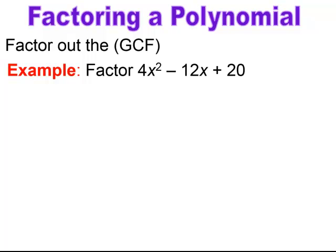In this next example, the GCF will simply be a numerical part because not every term has a variable, so there will be no variable in the GCF. I see that 4 can divide into every number, so the GCF is 4. Factoring that out: 4x² ÷ 4 = x², minus 12x ÷ 4 = −3x, and 20 ÷ 4 = +5. Close the parenthesis — that's the GCF factored out of the polynomial.